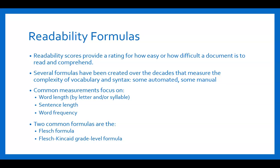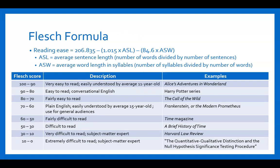Two of the common formulas are the Flesch formula and the Flesch-Kincaid grade level formula. The Flesch formula is one of the more popular ones. It gives you a number between zero and one hundred, where one hundred means it's the easiest to read and zero would be the most difficult. The formula subtracts a number times the average sentence length and a number times the average word length in syllables to produce the score.